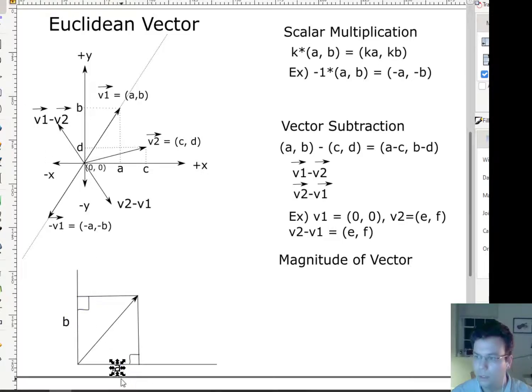And so these are right angles here. And so this is length b, this is length a. So actually what you notice is if I want to know the length of this vector, then actually I could just use the Pythagorean theorem, right? Because this is a right triangle.